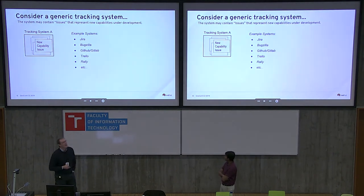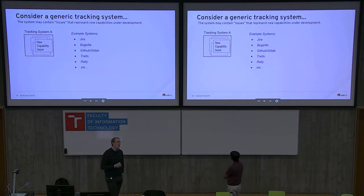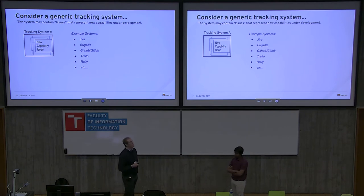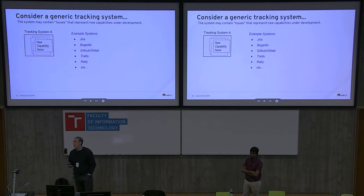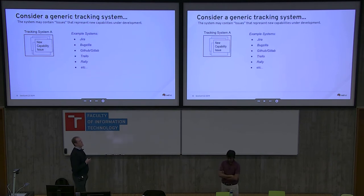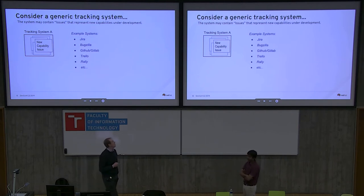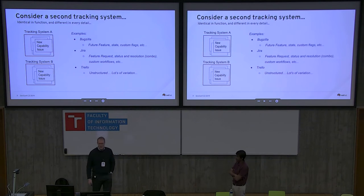So let's look at the problem space. Let's start out simply. Let's say that you've got an issue tracking system — a generic system with hundreds of thousands of issues. Maybe one of them represents a new capability that you care about for whatever reason. Some examples of these systems would be Jira, Bugzilla, GitHub or GitLab, Trello, Rally, and there are lots of others as well.